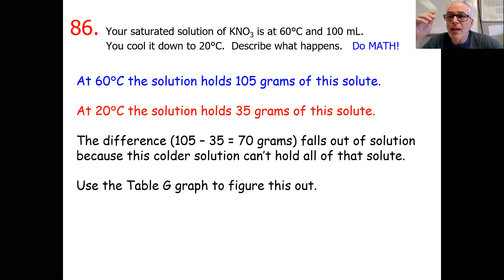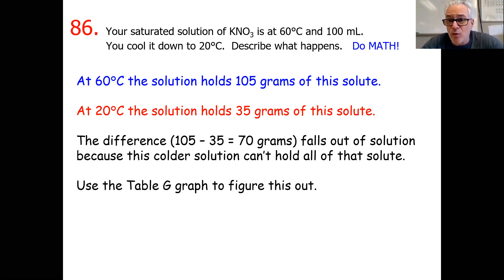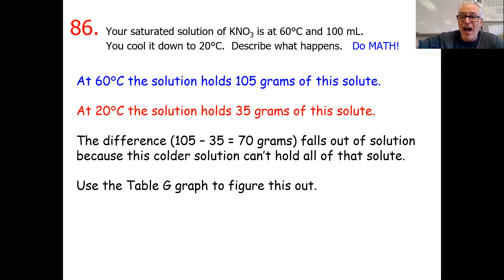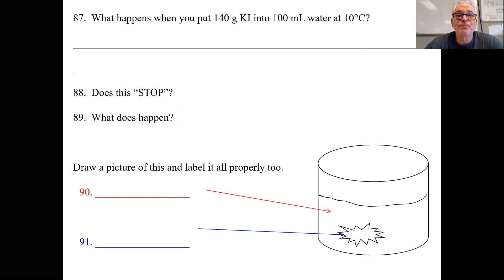Table G tells us how much solute fits in solution at a certain temperature, or it can tell you how much falls out of solution if you know where you start and where you're going by temperature. Start hot, get cold — or start cold and how much more will fit if you're going the other direction.